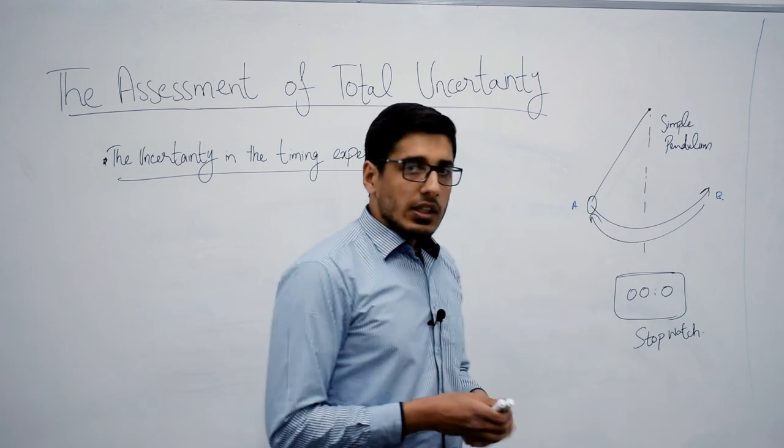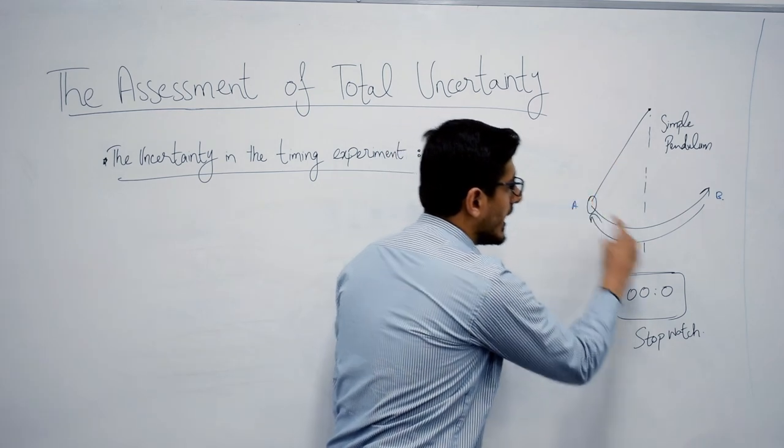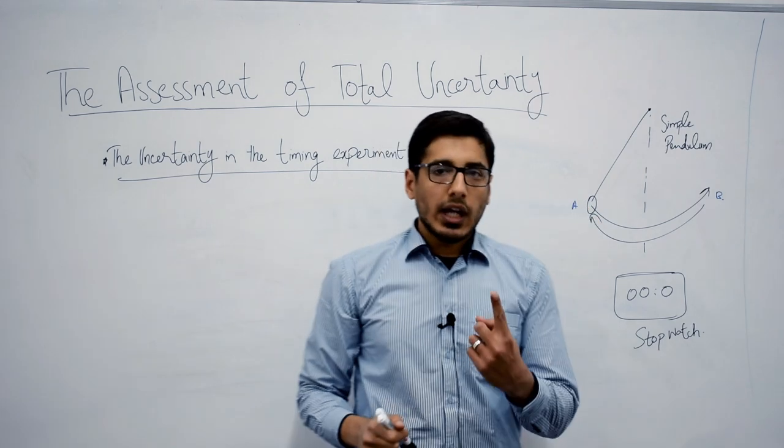Now the time period is actually the time which this bob in the simple pendulum will take in moving from point A to B and then back to A, which will be one time period.